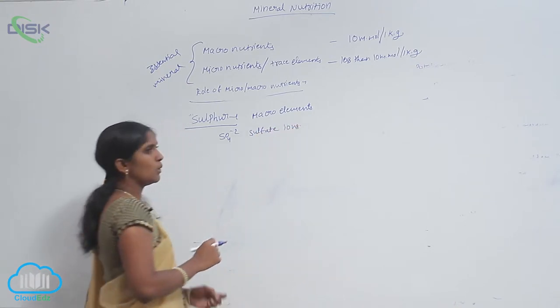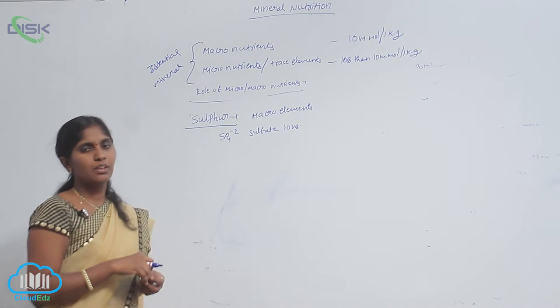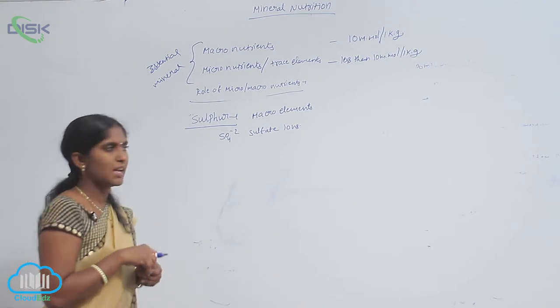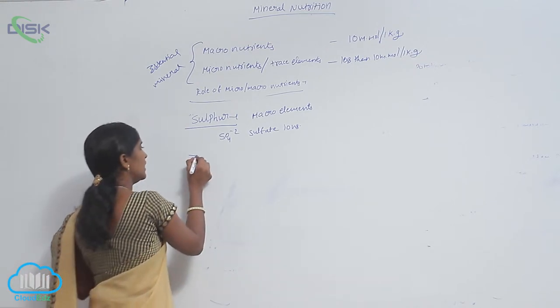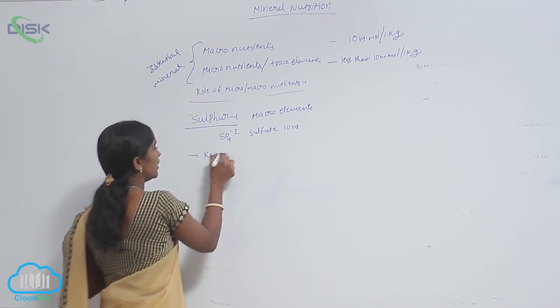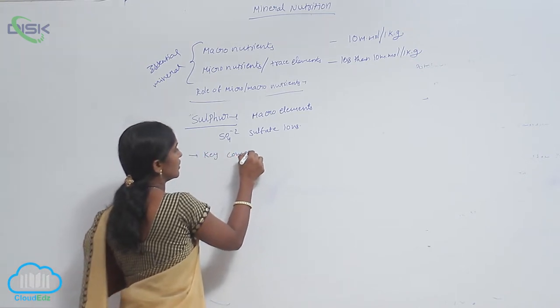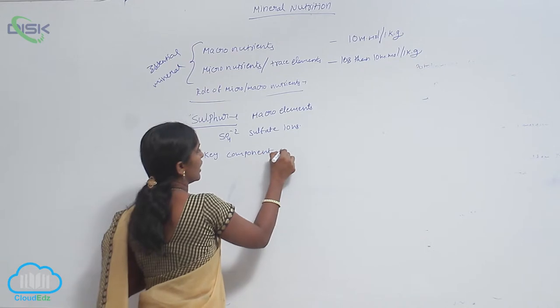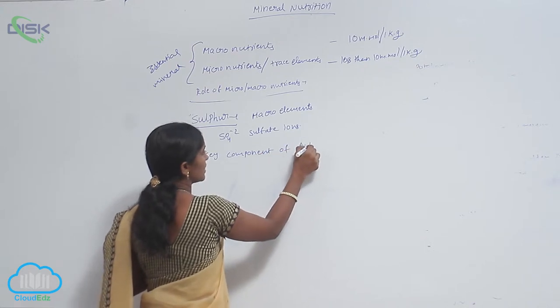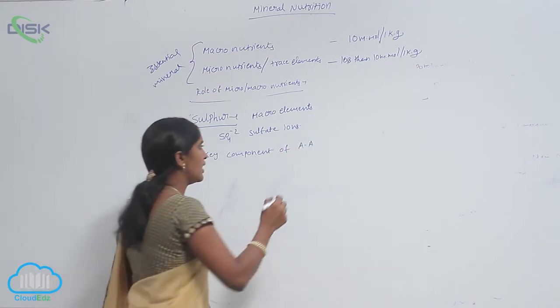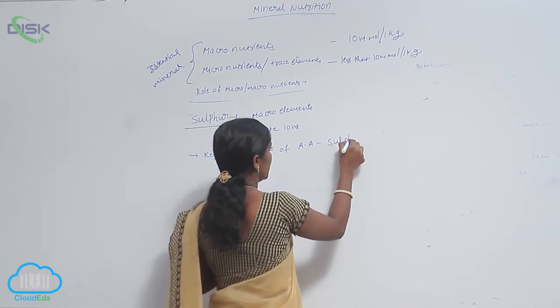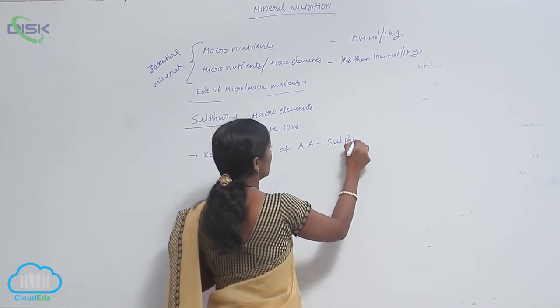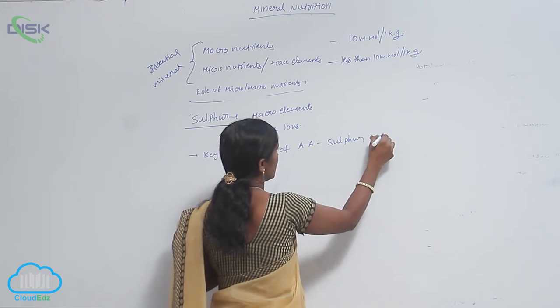What is the role of sulfur in metabolic activities of plants? It is the key component of amino acids. The amino acids are sulfur-containing amino acids.